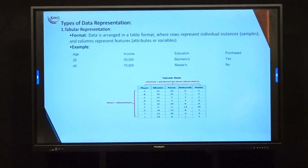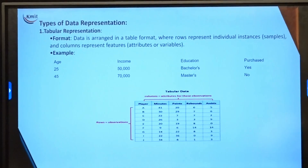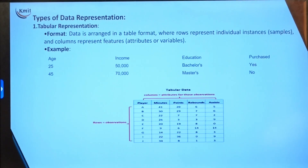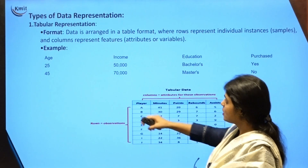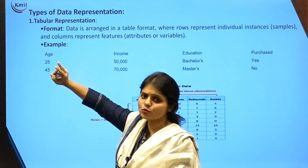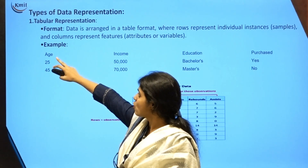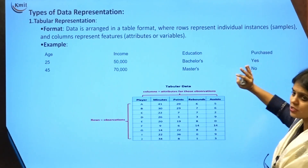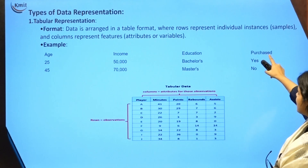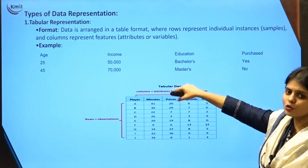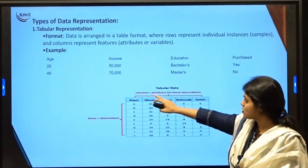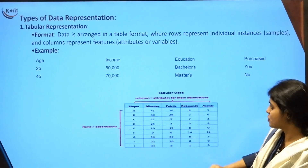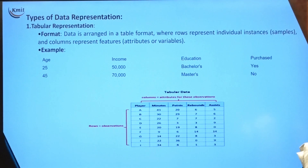The first type of data representation is tabular data, where data is arranged in rows and columns. Rows represent observations or samples, and columns represent features or attributes. For example, I have two rows representing two different data samples, with columns for age, income, education, and purchased. Rows represent observations; columns represent the attributes of those observations.